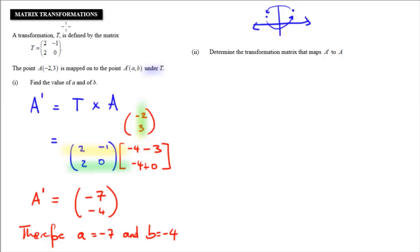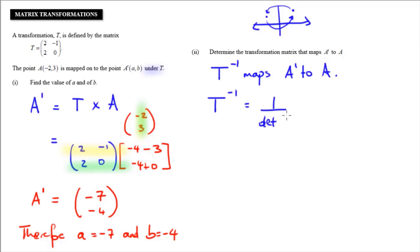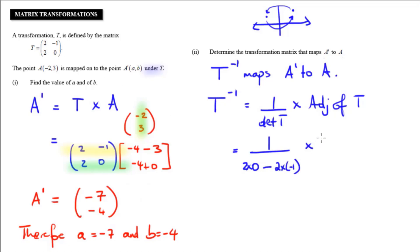Therefore, the transformation matrix that maps A prime to A is going to be the inverse of T — T inverse maps A prime back to A. To find the inverse, we multiply one over the determinant of the matrix by the adjoint of matrix T. First, I need to find the determinant of T: that's the product of the leading diagonal, which is 2 times 0, minus the product of the off-diagonal, which is 2 times negative 1, times the adjoint.